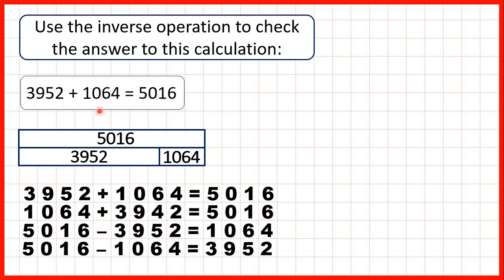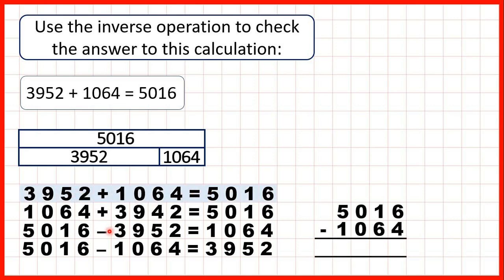If we start with this number and subtract this number, we should get the number that we started with. It says here to use the inverse operation. So because we have an addition calculation, using the inverse means checking using one of the subtraction calculations. Because we were given this statement, we could check using 5016 minus 1064.